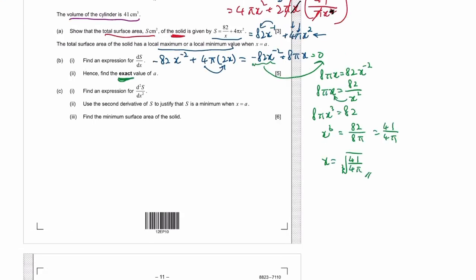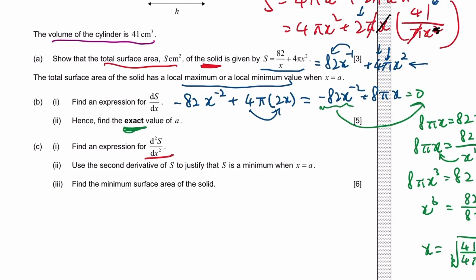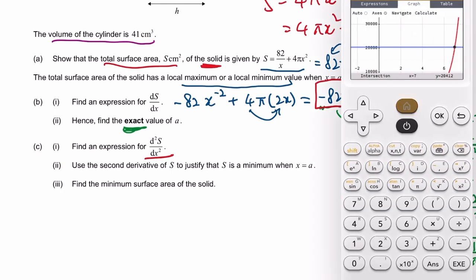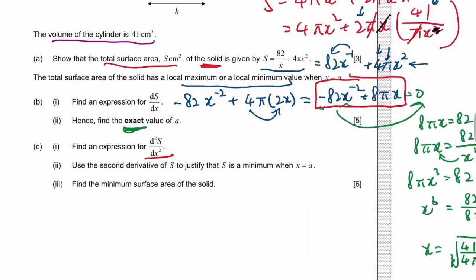They want the second derivative. The first derivative is this, we differentiate that again. Drop the negative 2 to negative 82, so that equals 164 x to the power of negative 3 plus 8 pi.